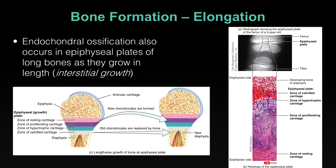The epiphyseal plate is the site of elongation of long bones. The bone forms but is smaller than it will be in adulthood. As you continue to grow and mature, your bones continue to grow until about 18 to 21 years old, when they reach final adult length. All of that growth is due to growth at the epiphyseal plate. Growth in length — end to end, top to bottom — is called interstitial growth, which is still endochondral ossification.